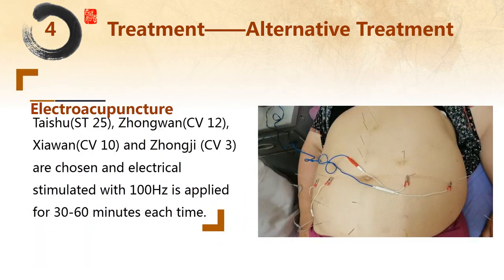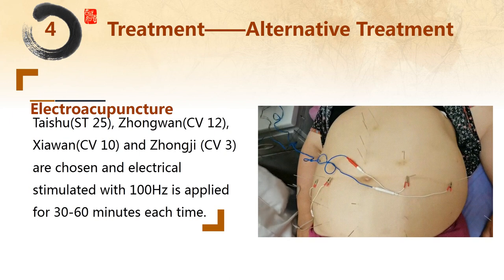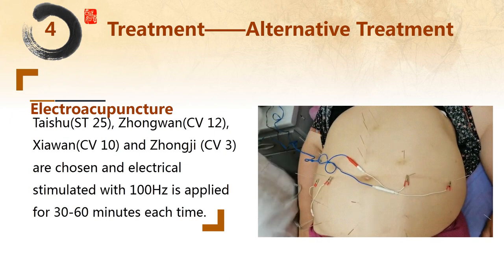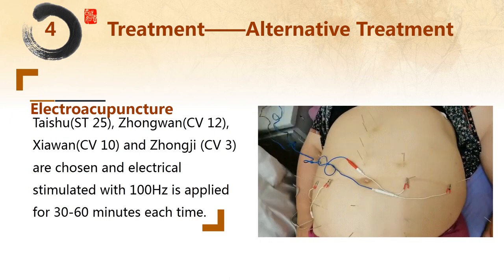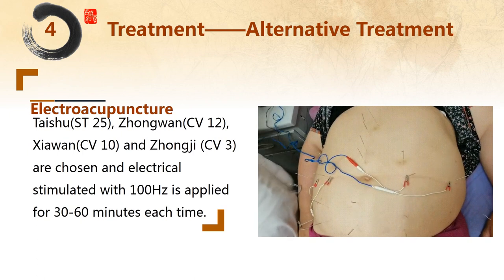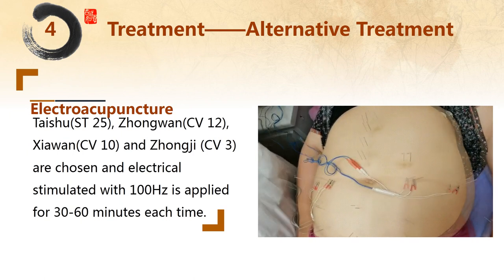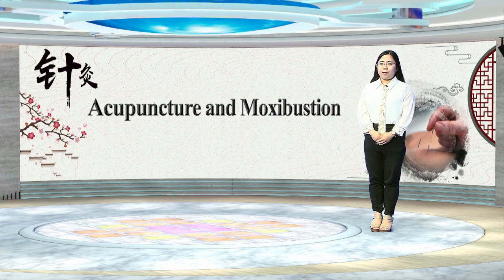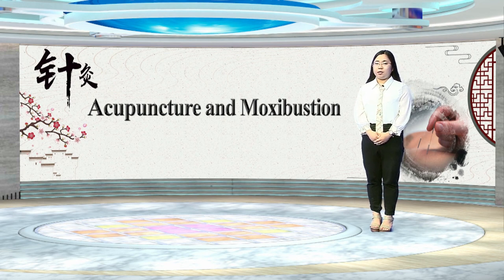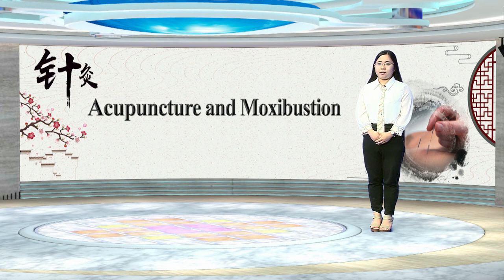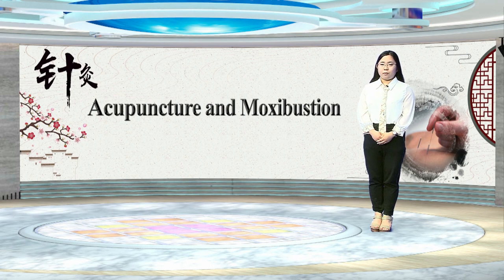For electroacupuncture, Tianshu, Zhongwan, Xiawan, and Zhongji are chosen and electro-stimulated with 100 Hz, applied for 30 to 60 minutes each time. To sum up, acupuncture is good at treating simple obesity. For secondary obesity, corresponding treatment should be given to correct the dysfunctions of involved systems or organs. Diet control and regular exercise during treatment is strongly recommended. That's all for this lesson.